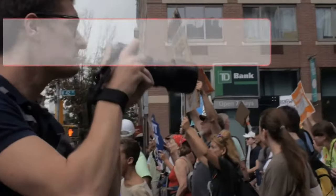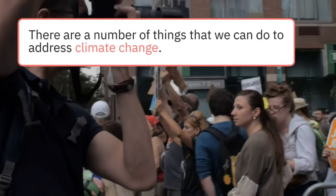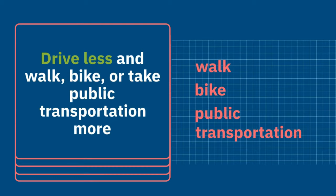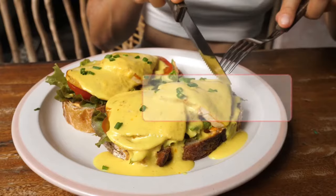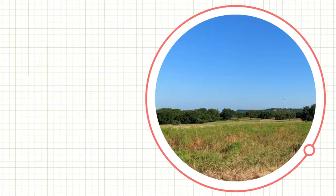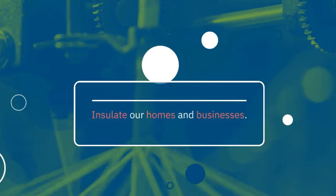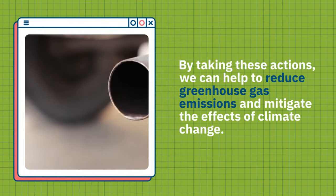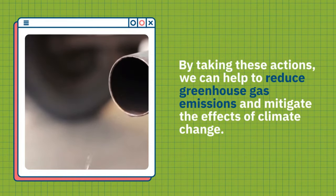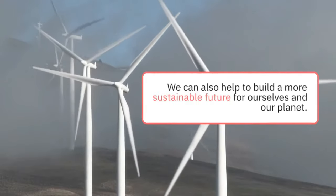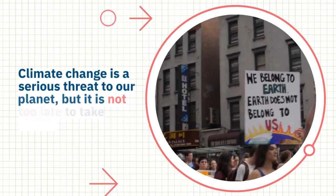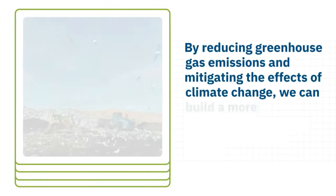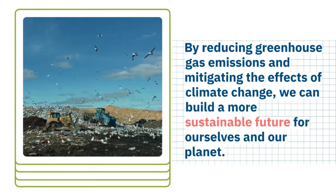What can we do? There are a number of things we can do to address climate change. Reduce our reliance on fossil fuels — drive less, walk or take public transport more. Eat less meat and more plant-based foods. Support renewable energy projects. Insulate our homes and businesses. Get involved in climate activism. By taking these actions we can help reduce greenhouse gas emissions and mitigate the effects of climate change. We can also help build a more sustainable future for ourselves and our planet.